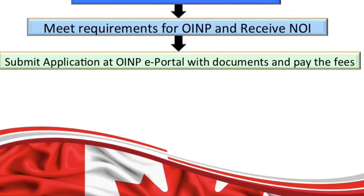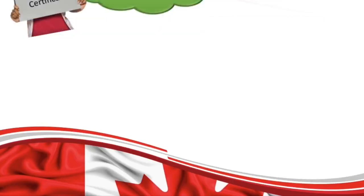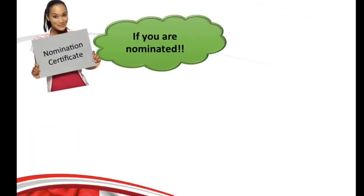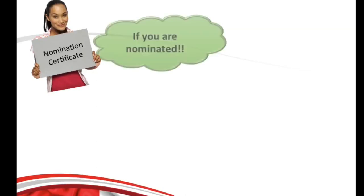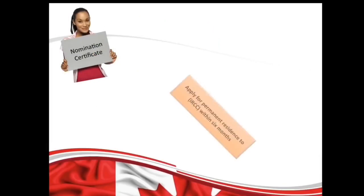After you submit your application, you will get an email confirming they have received it. If your application is successful, you will receive a nomination approval letter and an OINP Certificate of Nomination by email. Your next step is to apply for permanent residence to IRCC directly within six months.